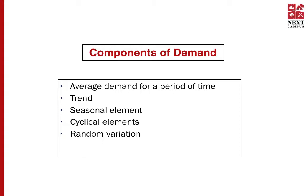The next element is the cyclical element. This is a long-term cycle where demand increases and then decreases, and can span several years. An example could be fashion trends — the same fashion may become popular again after a couple of years. The final component is random variation, which is variation in demand that occurs due to unforeseen circumstances and is highly unpredictable and hence cannot be forecasted.